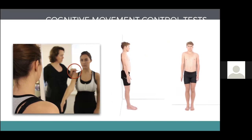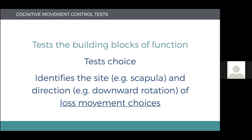She's changed her movement coordination strategies and is not able to control the scapula going into downward rotation. We can describe that as a lost movement choice into downward rotation. Once we've found that, we can restore the movement choices, practice, and help our patient improve their movement health and ultimately their quality of life.